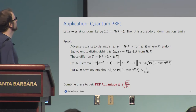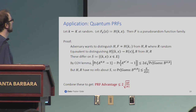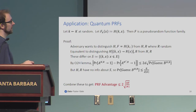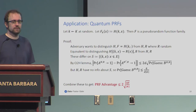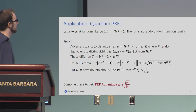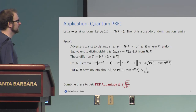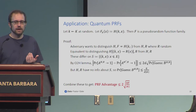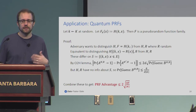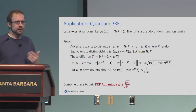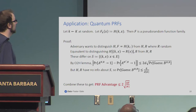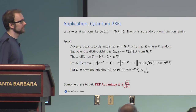Another simple application: if you have a function f_k(x) = H(k, x) where H is a random oracle, then this is a pseudo-random function. This is fairly obvious in the classical world. In the quantum world, the PRF advantage is less than this bound, and this bound is also very similar to the cost of a Grover attack on the seed or key of this pseudo-random function — so it's about what you would expect. This comes just straight from the one-way-to-hiding lemma.